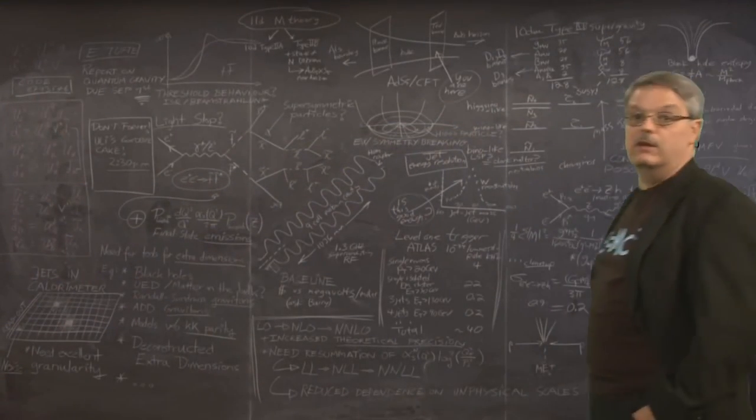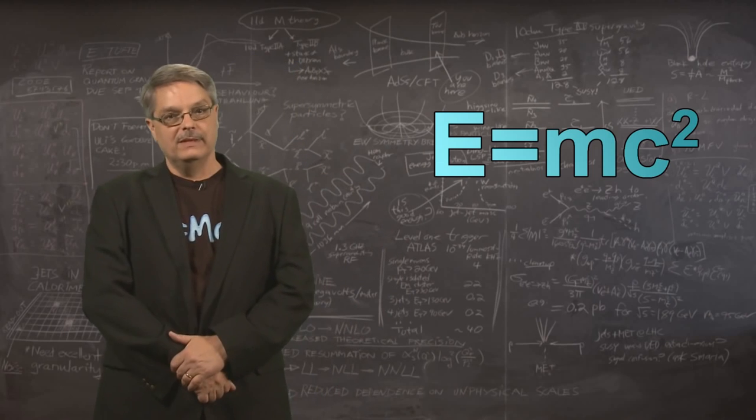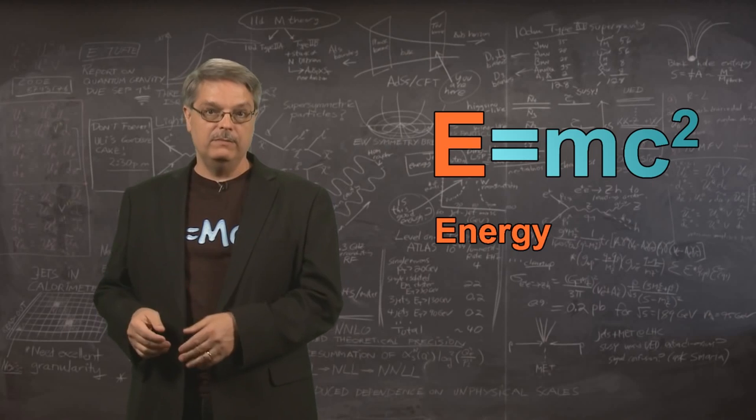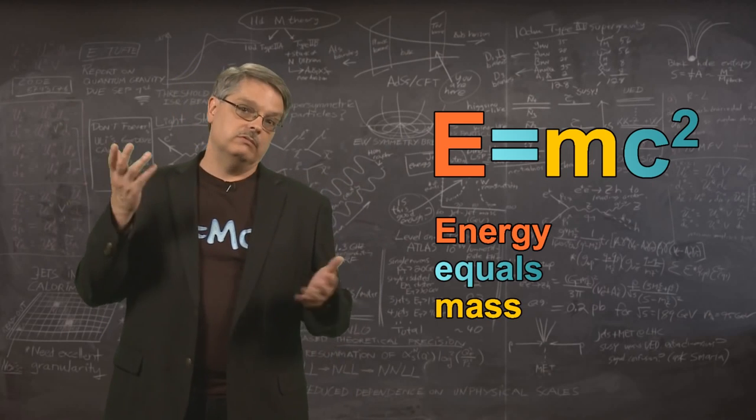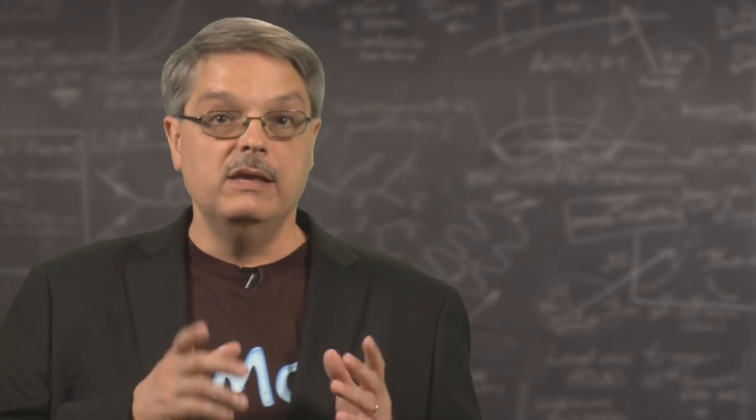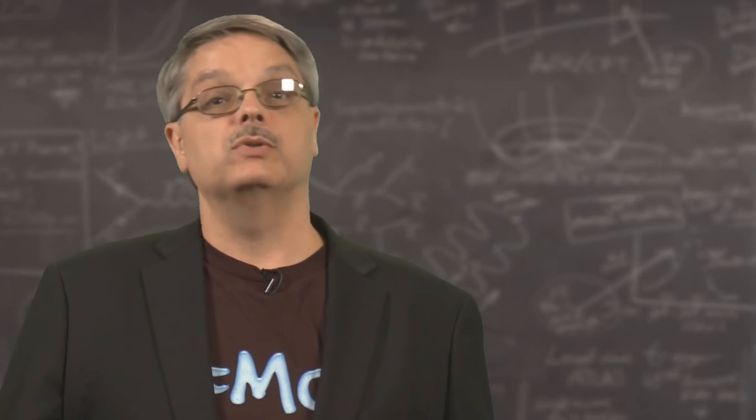The best known equation in all of science is Einstein's famous E equals mc squared. Stated simply, the equation says that energy, which is the E, equals mass, which is the M. The c squared term is just a conversion factor like when you convert feet to meters. The understanding that mass and energy were the same was a revolutionary idea, but that's only part of the story.